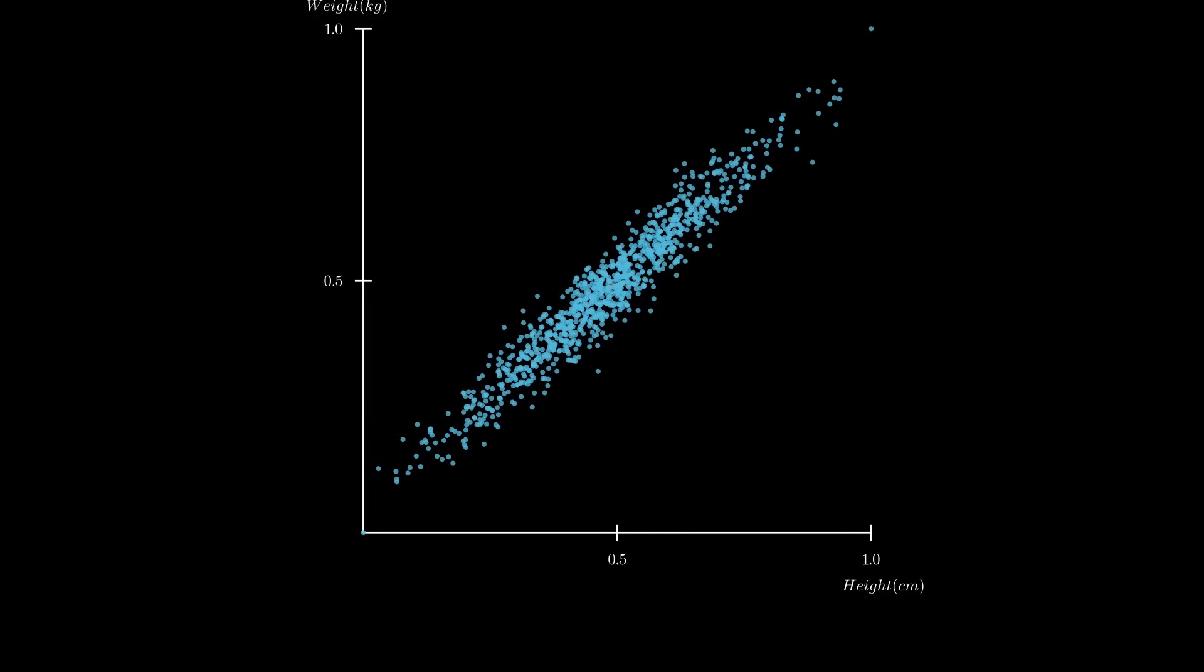You can see that the data varies along two main directions represented by the red and green arrows, and the variation along the red arrow seems more significant than that along the green arrow. These directions are known as the principal components in principal component analysis.